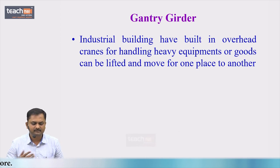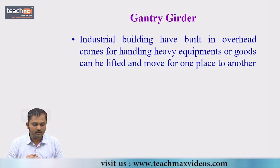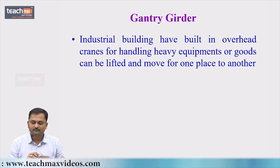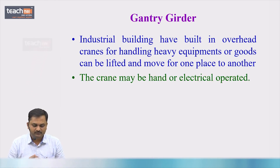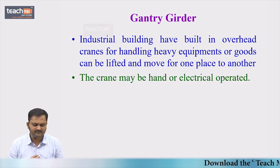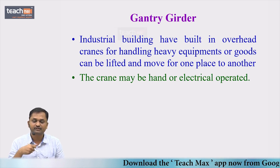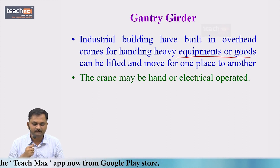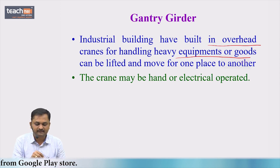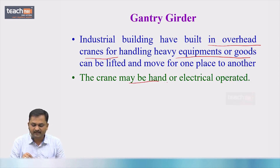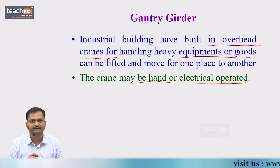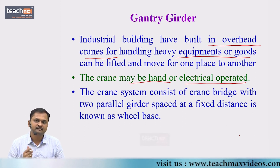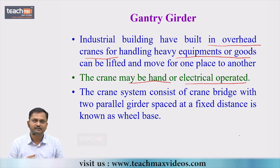In industrial buildings, overhead cranes are provided for handling heavy equipment or goods that can be lifted and moved from one place to another. The function of industrial buildings is very important — heavy loads or equipment are lifted from one place to another within a building using heavy overhead cranes. These cranes may be hand-operated or electronically operated.